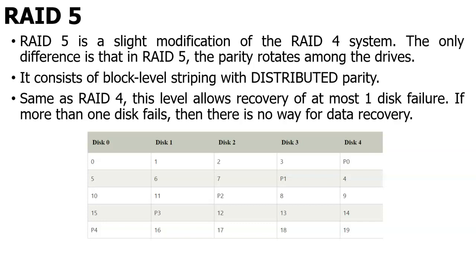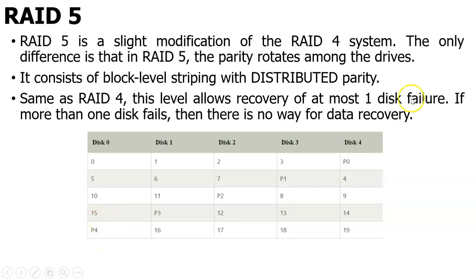Then RAID 5 — RAID 5 is distributed parity bit. Instead of giving one separate disk for storing the parity bit, I am distributing the parity bit among the data disks itself. So for the first array, I have the parity bit in disk 4. For the second row, I have the parity bit in the third disk. For the third row, in the second disk. For the fourth row, in the first disk. Similarly, I am sharing the parity bit among the data itself, not separately in one disk.